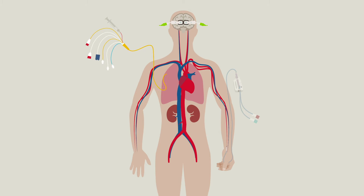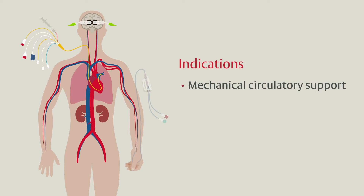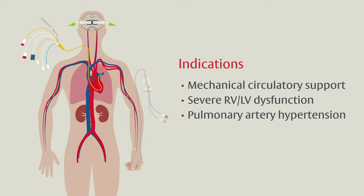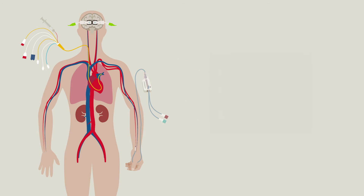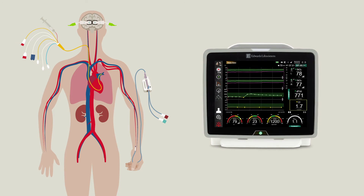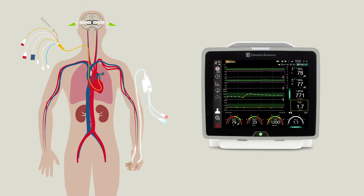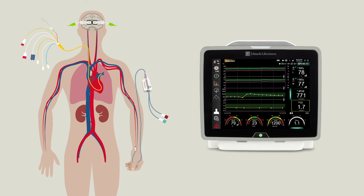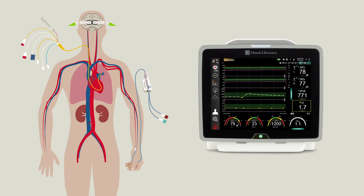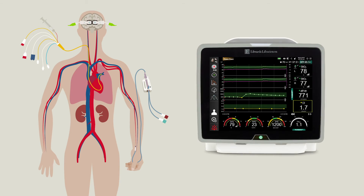Some patients still benefit from the Swan-Ganz catheter if they have mechanical support devices such as a balloon pump or an Impella in place, if they have severe RV or LV dysfunction, or if there's a diagnosis of pulmonary arterial hypertension. Whichever modality is ultimately deemed optimal for the patient, the Hemisphere monitoring platform allows for simultaneous use of any combination of technologies, including cerebral and somatic tissue oximetry.